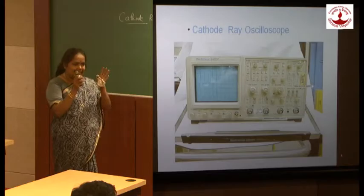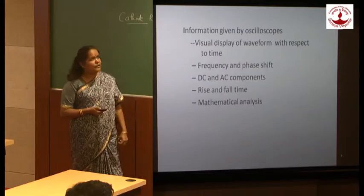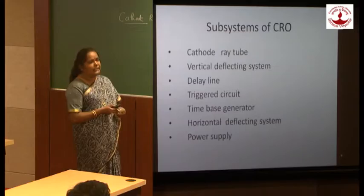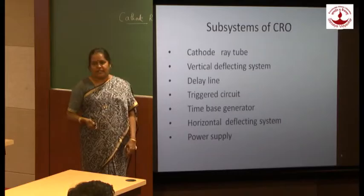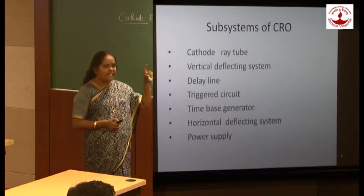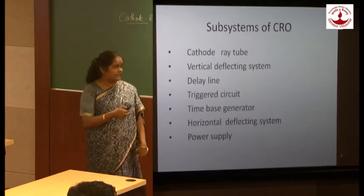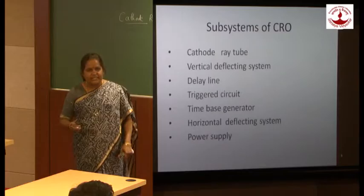What is inside that box and how are the systems linked with each other? There are seven subsystems in the CRO. The first subsystem is the cathode ray tube, also called the CRT. The second subsystem is the vertical deflecting system. Third is the delay line. Fourth is the trigger circuit. Then the time-base generator, horizontal deflecting circuit, and power supply. All these seven systems are linked with each other, which makes the functioning of the CRO.